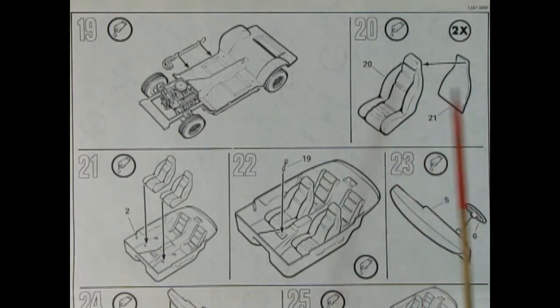Panel 20 shows our seat front and our seat back gluing together. You do this twice, then you drop both of the front bucket seats into the interior tub and drop the shifter into place. Then we've got our nice dashboard and steering wheel which glue all together here.